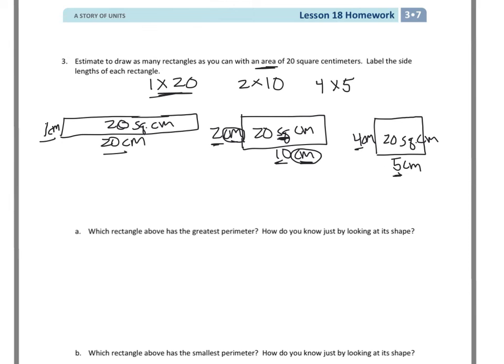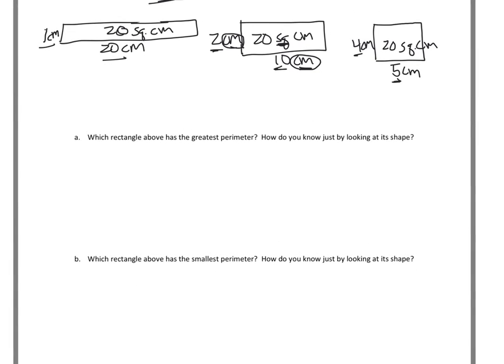So there's my three different drawings. Now you have two parts to do at the bottom. Which rectangle above has the greatest perimeter? So you get to go through and find the perimeter for these. Fully knowing that if this is 20, this is 20. If this is 1, this is 1. If this rectangle has 2 here, it's got to have 2 there. If it has 10 there, it's got to have 10 there. Because opposite sides are equal.